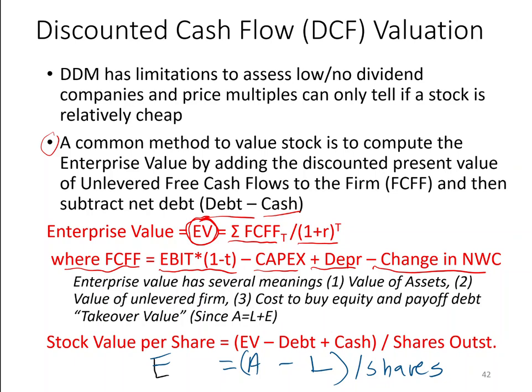One interpretation: EV is the value of the firm's assets — the ability of the firm's assets to generate cash flows. You can also think of it as the value of an unlevered firm; if the firm has no debt, those are equity cash flows. A third interpretation: it's the cost to buy the equity and then pay off the debt, also called the takeover value.